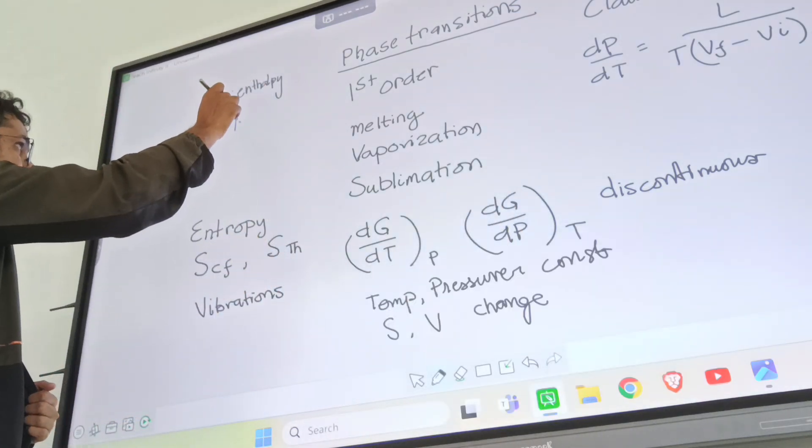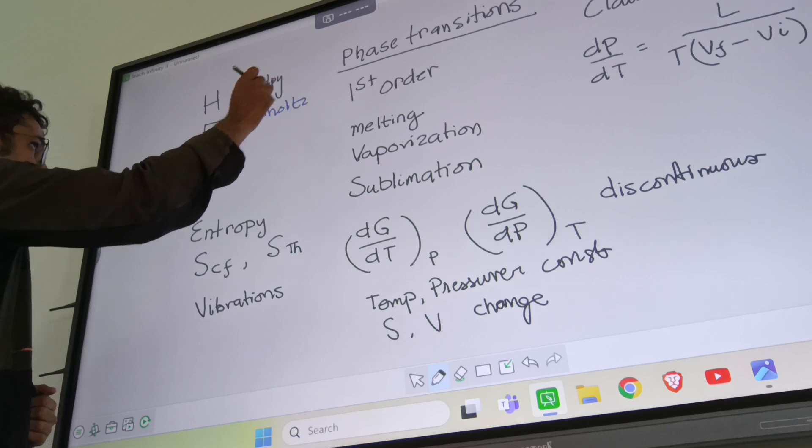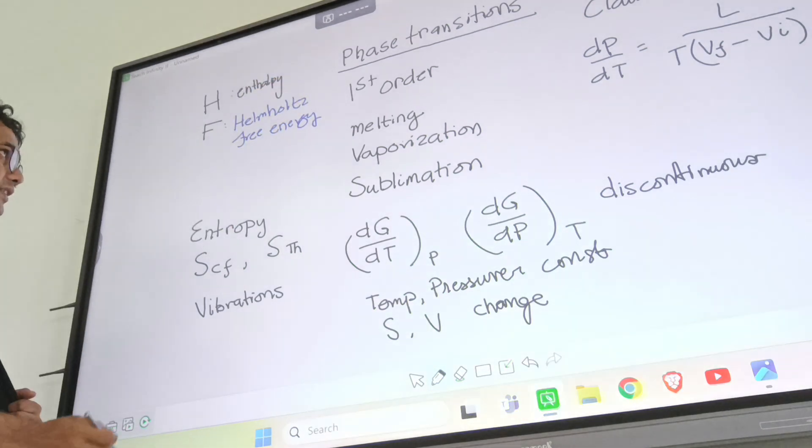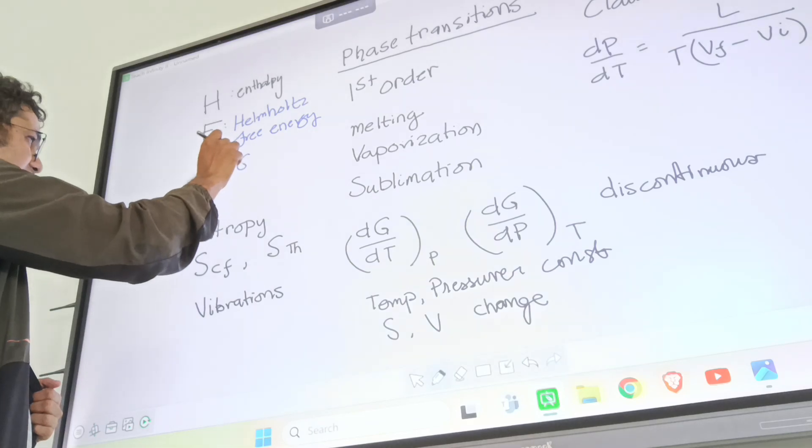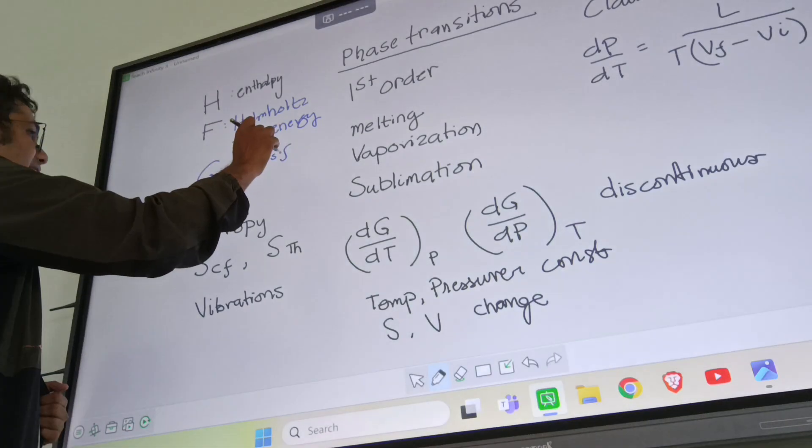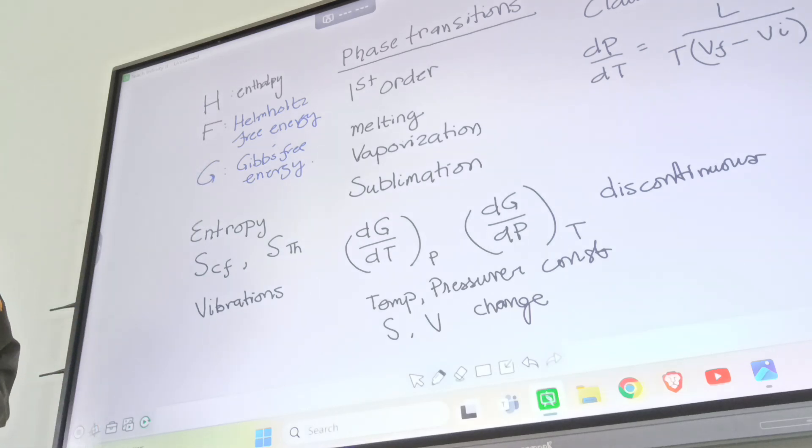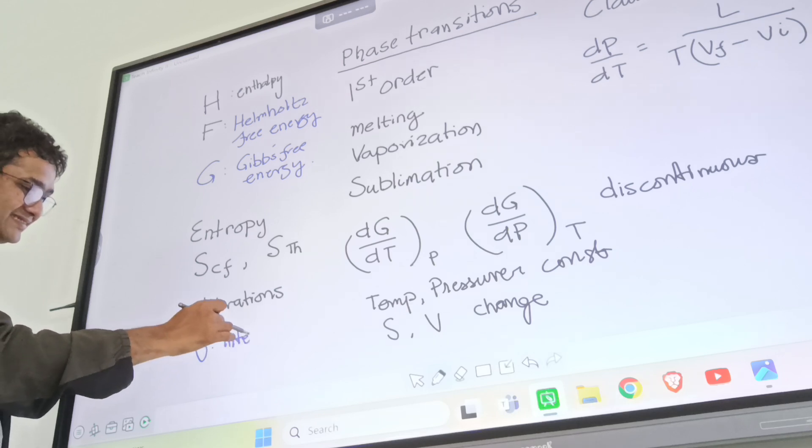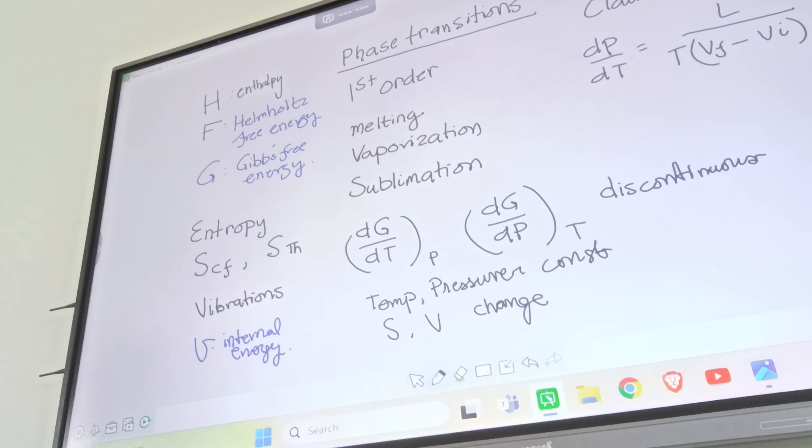This is Helmholtz free energy F. And this is G, Gibbs free energy. And you have your internal energy U. Now we will try to understand what these different potentials mean.